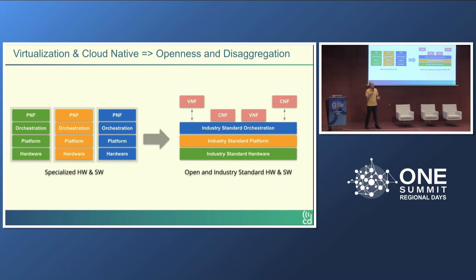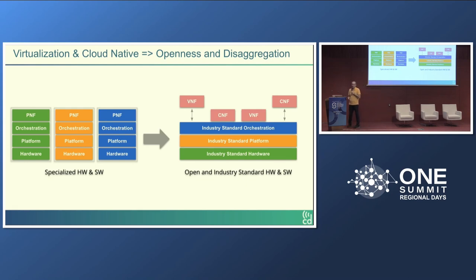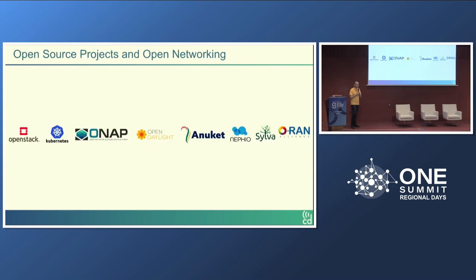As we continued within OPNFV, we realized the integration and continuous delivery aspects of that problem were mind-boggling and we couldn't solve them alone. That actually resulted in us reaching out to different communities — OpenStack, OpenDaylight, ONAP, CNCF and so on — saying we should start working on these problems together. If you look at the open networking ecosystem, there are lots of projects, some well established and some new, and this integration problem will continue to exist. We started working on this topic in 2016-17.